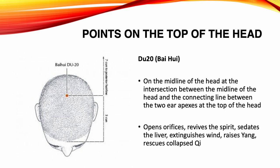Du 20, Bai Hui. Location: on the midline of the head, at the intersection between the midline of the head and the connecting line between the two ear apices at the top of the head. Functions: opens orifices, revives the spirit, sedates the liver, extinguishes wind, raises yang, rescues collapsed qi. Indications: headache, dizziness, tinnitus, deafness, nasal obstruction, coma from stroke, paralysis, mental disorders, seizures, hysteria, insomnia, forgetfulness, rectal and uterine prolapse, incontinence, hemorrhoids, shock.